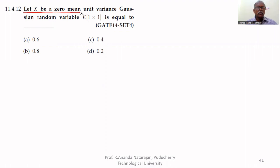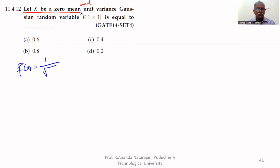Let x be a zero mean and unit variance Gaussian random variable. Its probability density function f of x equals 1 divided by root 2 pi, times e to the power of minus x squared over 2.